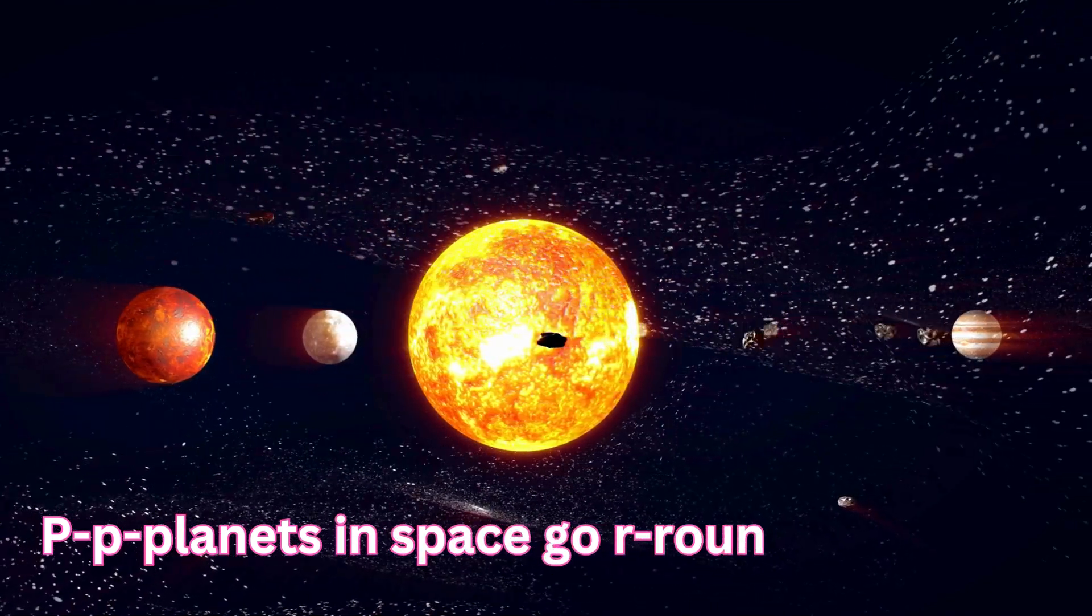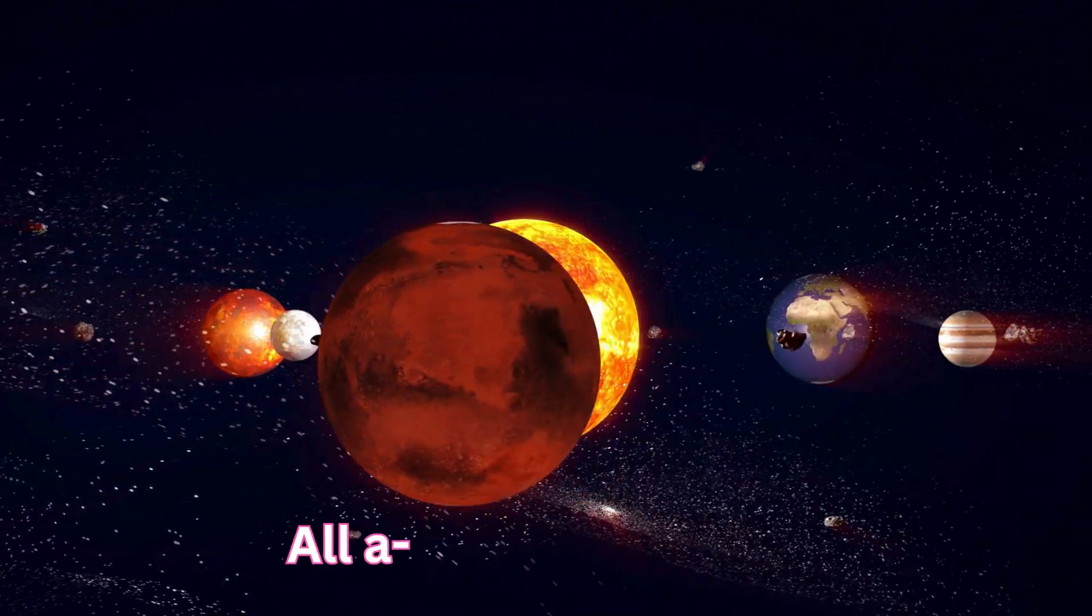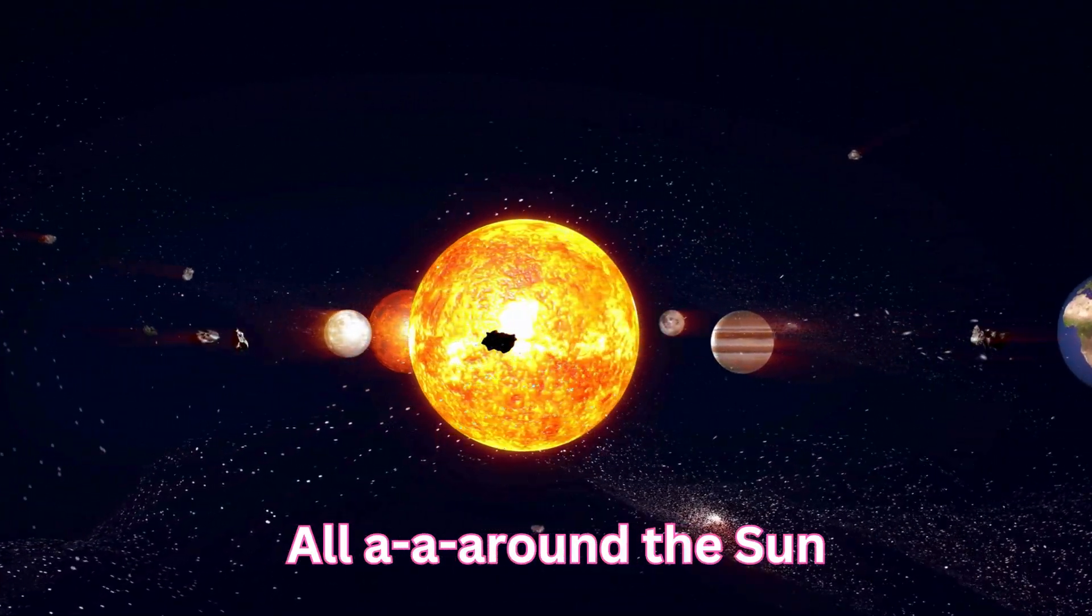Planets in space go round and round, round and round, round and round. Planets in space go round and round, all around the sun, all around the sun.